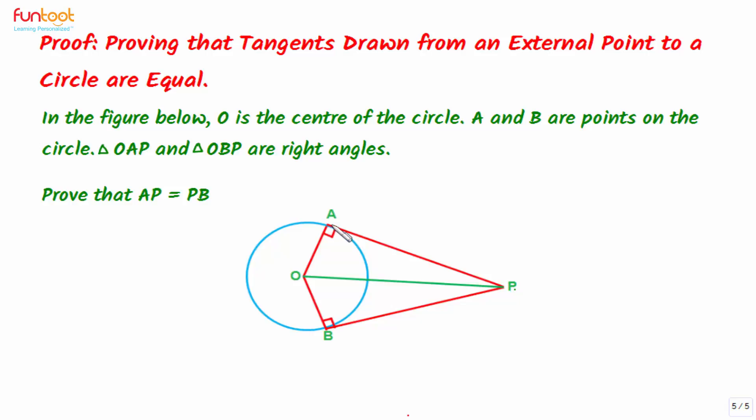Tangent PA is perpendicular to radius OA at the point of contact A. Similarly, tangent PB is perpendicular to radius OB at the point of contact B.